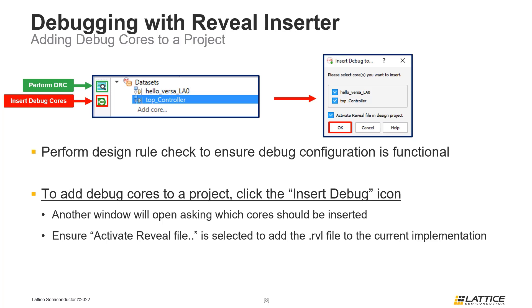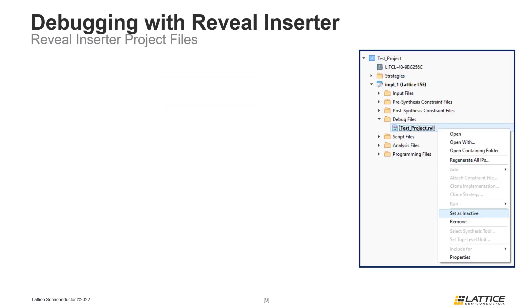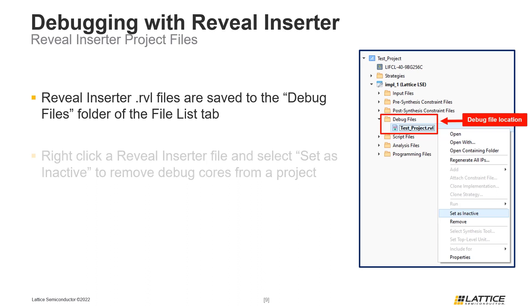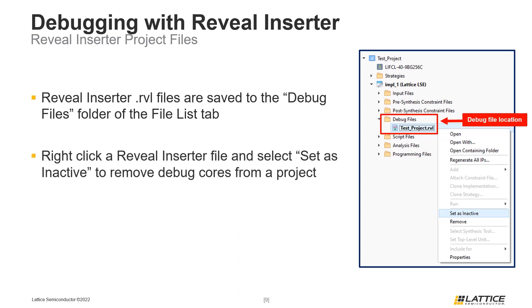When a .rvl Reveal Inserter configuration file is added to a project's implementation, it will be saved to the Debug Files folder in the File List tab. This file contains all the settings specified for each debug core and controls whether the debug cores are active within the project's implementation. If this file is inactive when the process flow is run, the debug cores won't be added. If users do not want to include debug cores, they can set the .rvl file as inactive by right-clicking it and selecting Set as Inactive from the drop-down list.